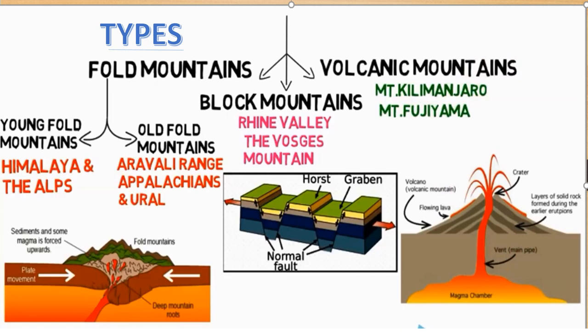Block mountains are formed as a result of the uplifting of the earth's crust when it is pushed up between two fault lines. The uplifted block forms block mountains, also called a horst block mountain. Volcanic mountains are formed as a result of volcanic activity. Mount Kilimanjaro in Africa and Mount Fujiyama in Japan are examples of volcanic mountains.